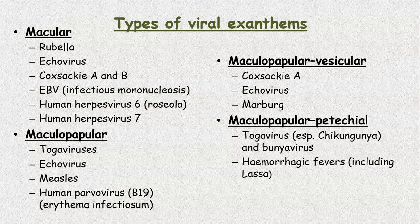Then a maculopapular and vesicular rash, seen in less common viruses like coxsackie A, echovirus, and Marburg virus. Maculopapular petechial rash is a common rash seen in hemorrhagic fevers that include dengue and Lassa fever, also seen in toga virus which is called as chikungunya and bunyavirus.